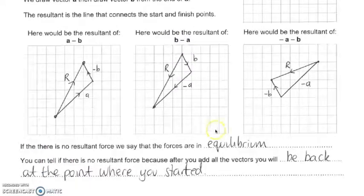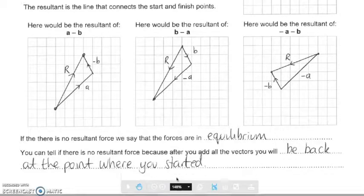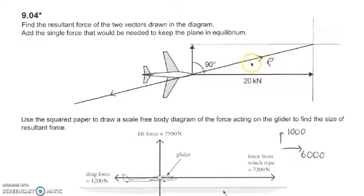If there's no resultant force, we say the forces are in equilibrium. You can tell because after adding all the vectors you return to the starting point. For example: find the resultant force of the two vectors in the diagram, then add the single force needed to keep the plane in equilibrium. The resultant vector has a horizontal and vertical component. To achieve equilibrium, the resultant force must be zero, so we draw a force in the opposite direction with the same length as the resultant vector.